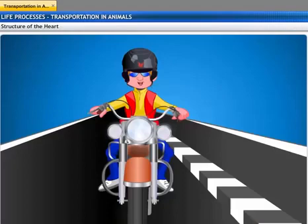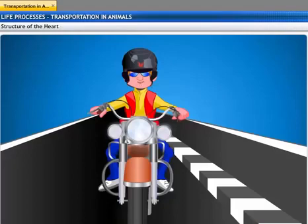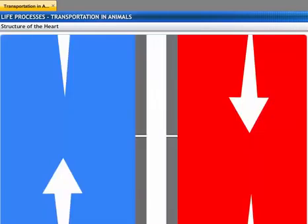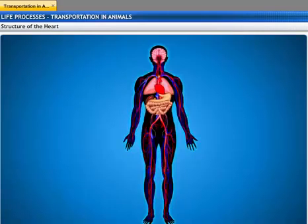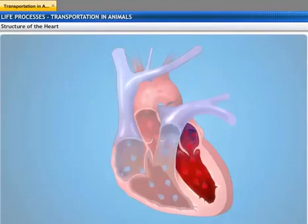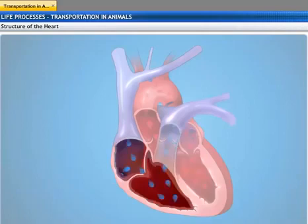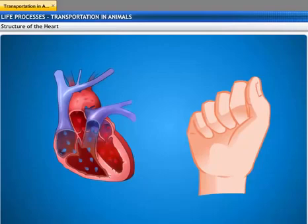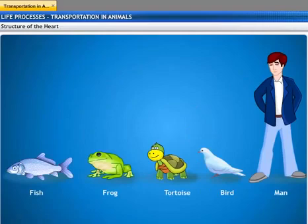These white lines on the road are called dividers — they are used to separate incoming traffic from outgoing traffic. Similarly, the heart has specific chambers that prevent oxygenated blood from mixing with deoxygenated blood. The heart is a muscular organ which is about the size of our fist. The structure of the heart is not the same in all animals.